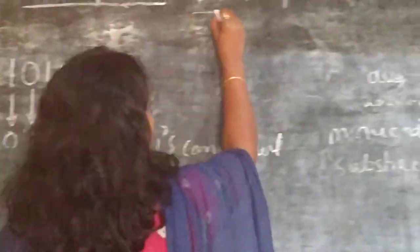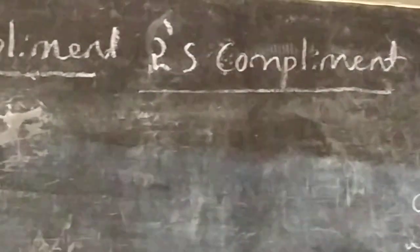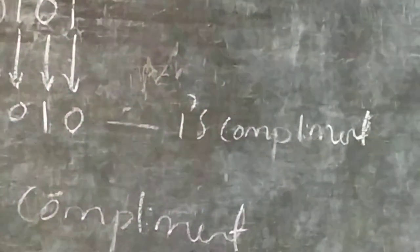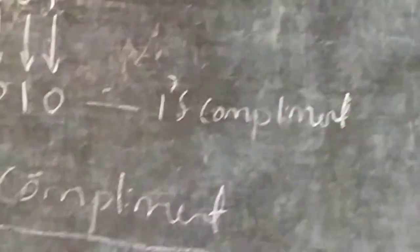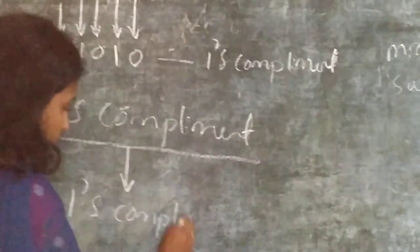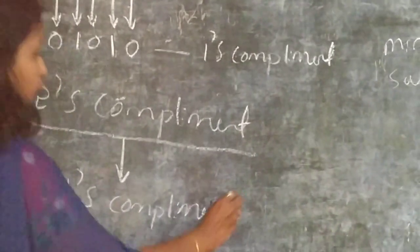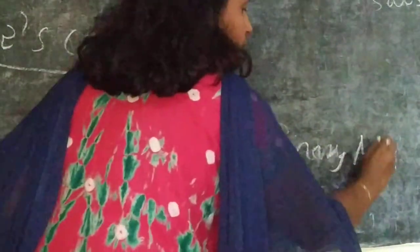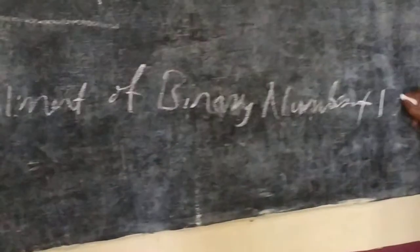Now, what do you mean by 2s Complement? The 2s Complement of any binary number is defined as the 1s Complement of that binary number, plus 1 added at the end. We should add 1 at the end.